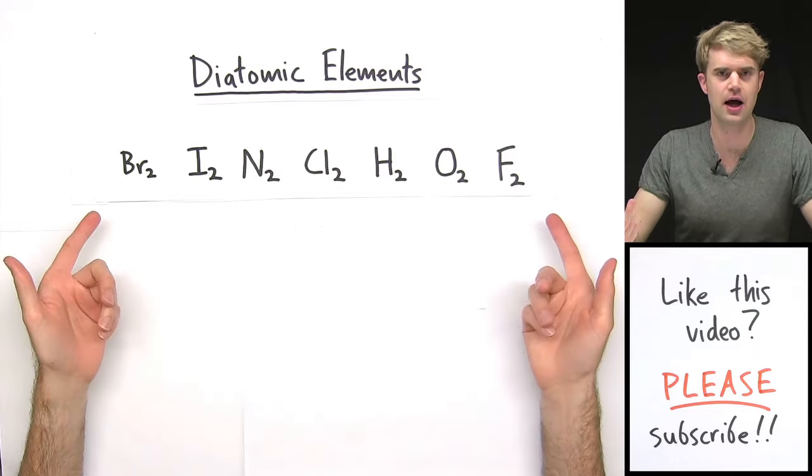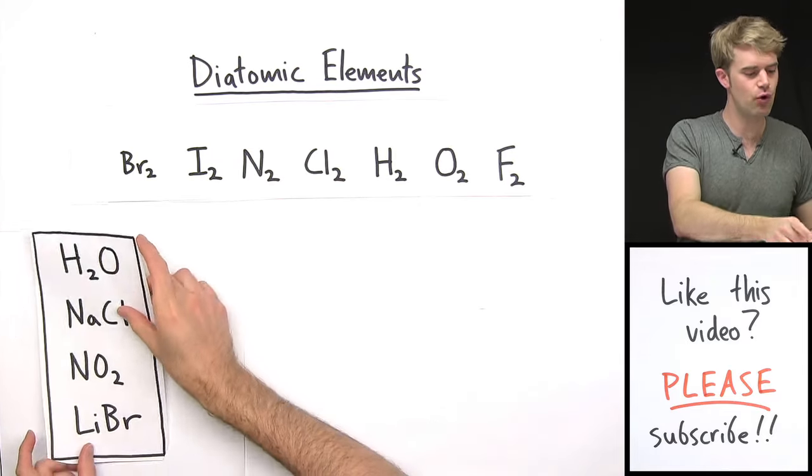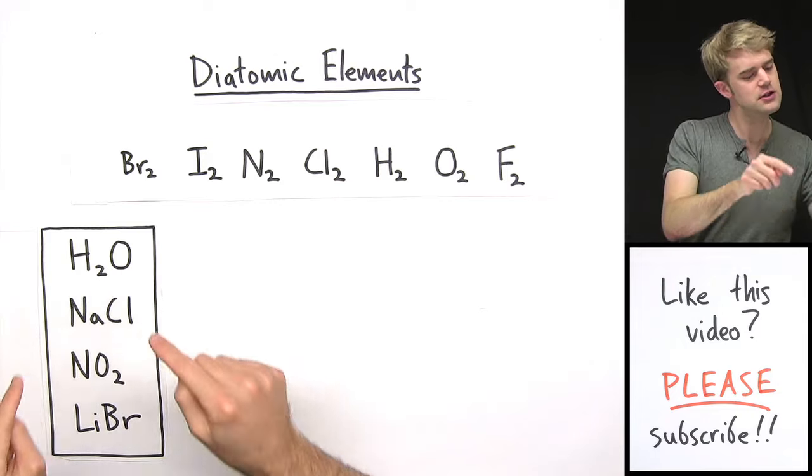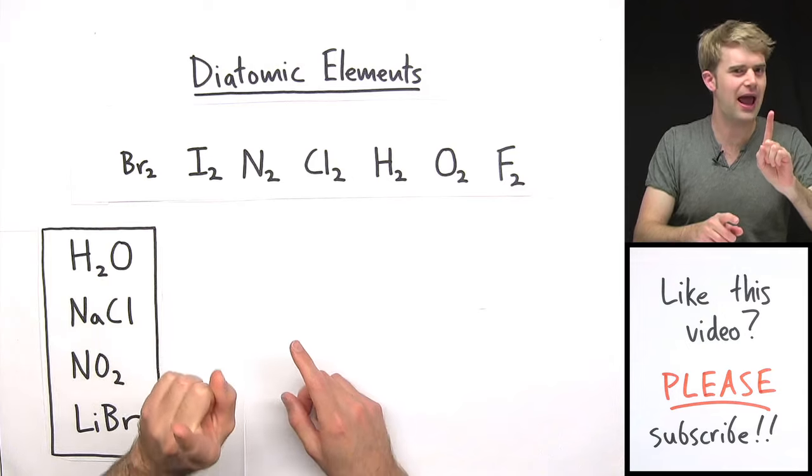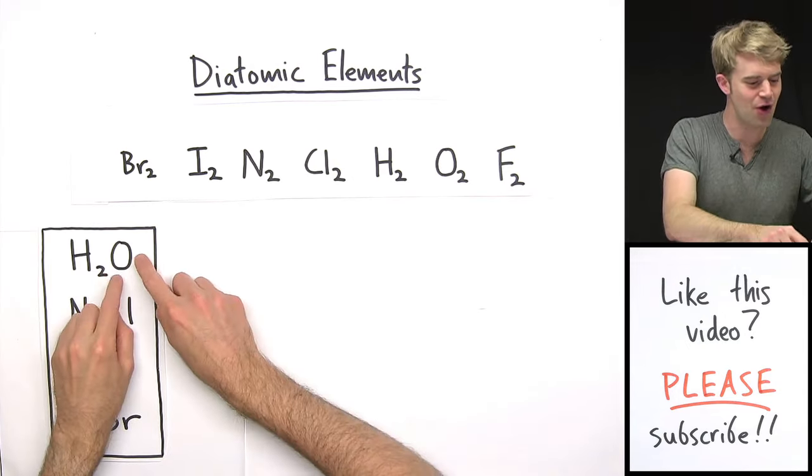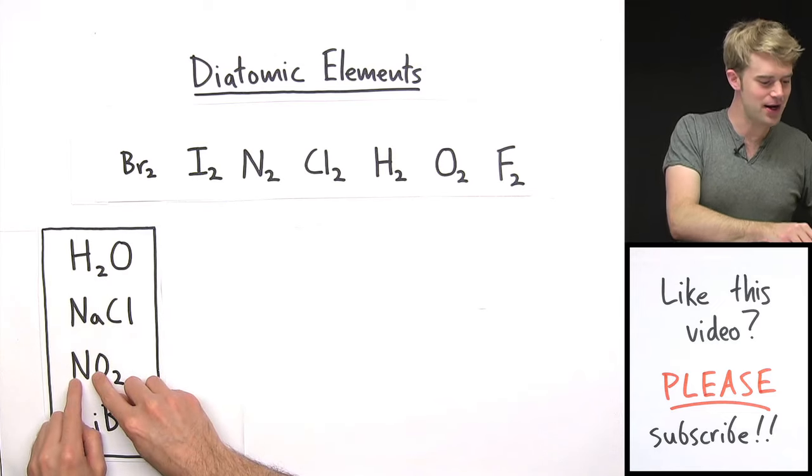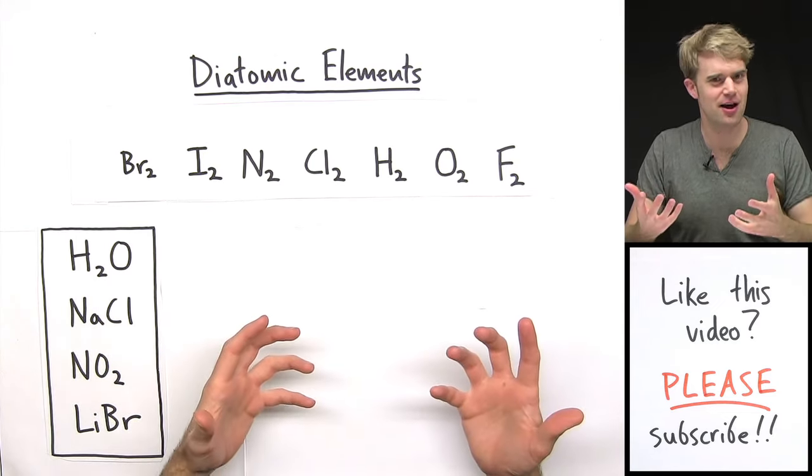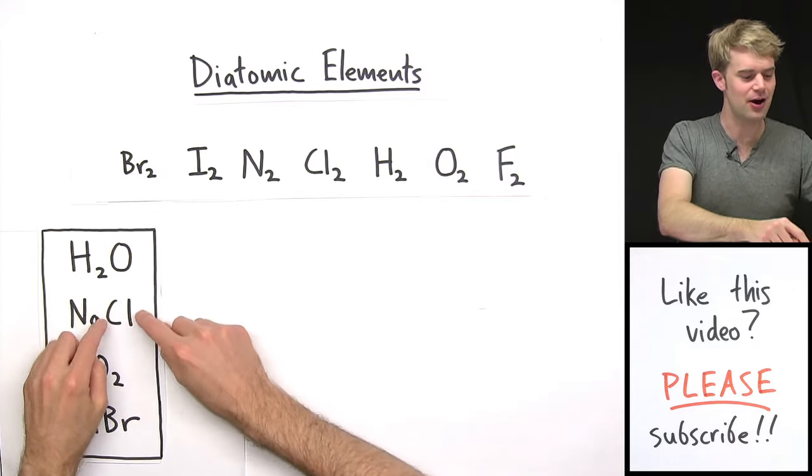So after you learn about the diatomic elements, it can be kind of confusing when you run into formulas for chemical compounds like these. All of these formulas contain diatomic elements but there's only one atom of them. So here we have one oxygen atom, one chlorine atom, one nitrogen atom, one bromine atom. So can you see why this is kind of confusing? Because here they're in pairs and here they're individual.